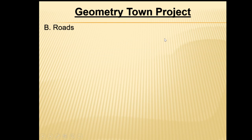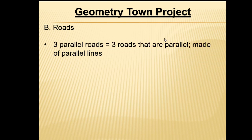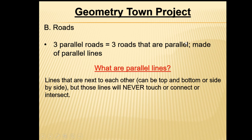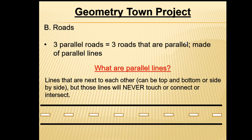Still on the roads: you must have three parallel roads. Parallel roads are made of parallel lines — lines that are next to each other, either up and down or side by side, but those lines will never touch, connect, or intersect with each other. Here's a brief example: the two black lines represent the outer edges of the road. If they go on forever, they will never touch, connect, or intersect with each other.